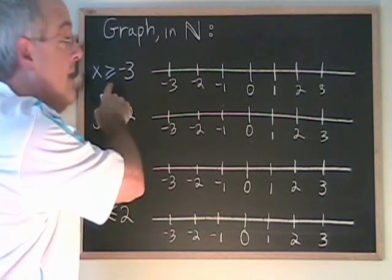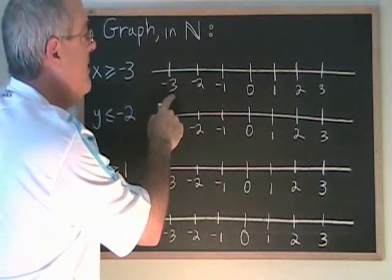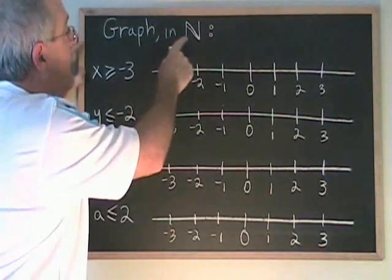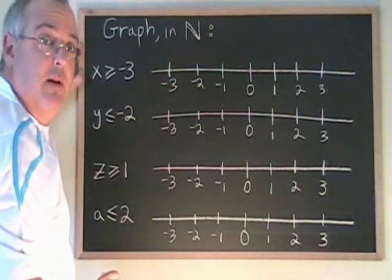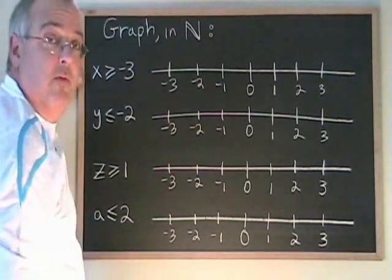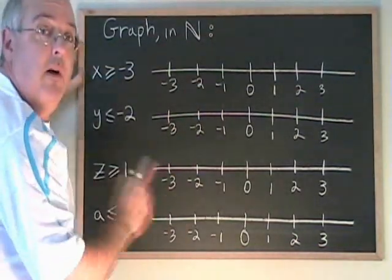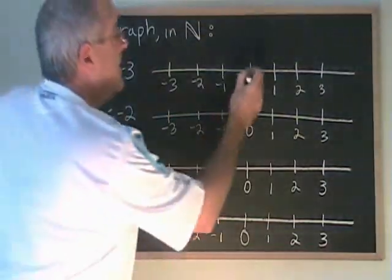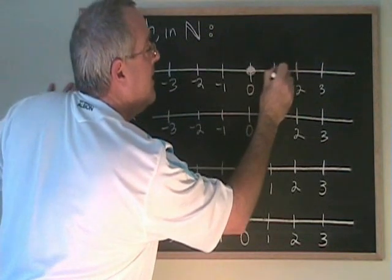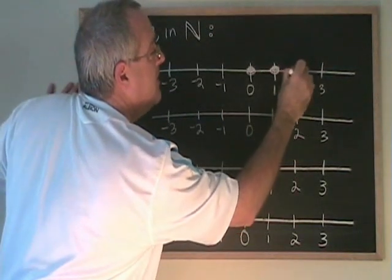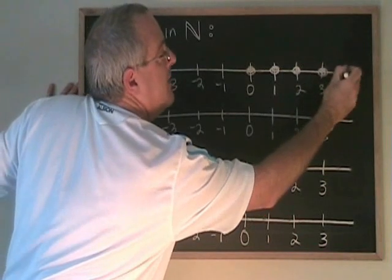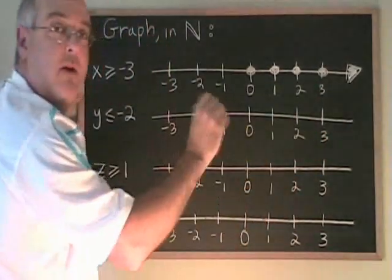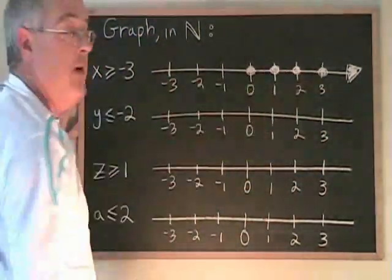x greater than or equal to negative 3 would seem to be these numbers going on and on in the positive direction, but be careful — this is in natural numbers. Natural numbers do not include negative 2 and negative 1. Even though they are greater than negative 3, they will not be part of the answer. The natural numbers that are greater than or equal to negative 3 start at 0 and include all of the positive natural numbers. So we draw an arrow or put three dots to indicate that it continues going on past the number 3.